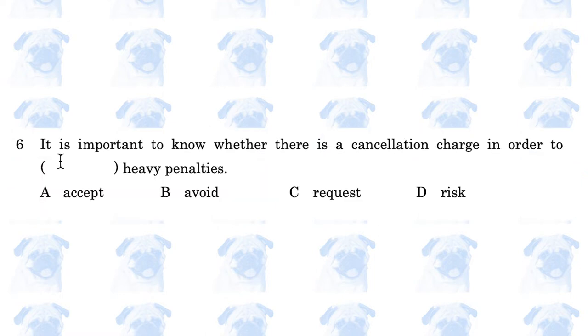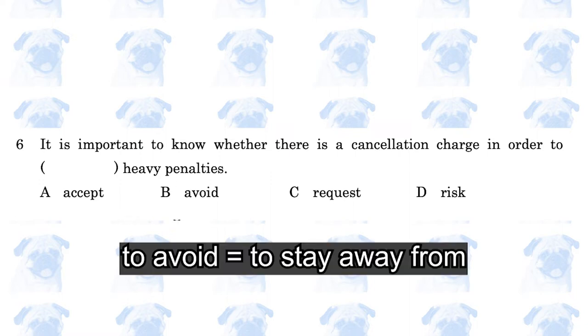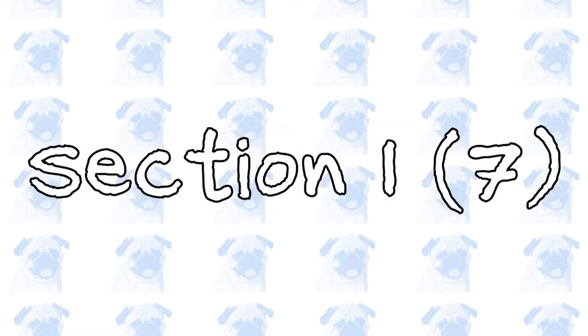It is important to know whether there is a cancellation charge in order to blank heavy penalties. In order to B, avoid. Avoid is a very basic word, so you should already know what it means.